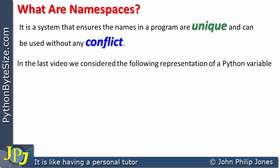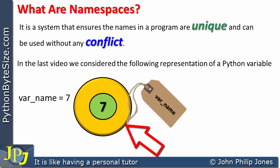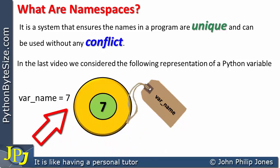In the last video, we considered the following representation of a Python variable. Consider this program statement: var_name is assigned 7. Under the hood of Python, what happens when this program statement executes is that we get an instance of the integer class that has the value of 7. This instance is then labeled with the identifier that was used in the Python program statement.